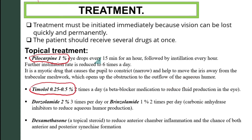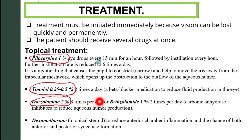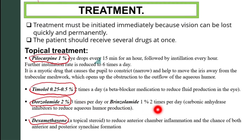The second topical drug is timolol 0.25–0.5%, given two times a day. Timolol is a beta-blocker that reduces fluid production in the eye. Next is dorzolamide 2%, given three times per day, or brinzolamide 1%, two times per day — both are carbonic anhydrase inhibitors which reduce aqueous humor production. Dexamethasone, a topical steroid, is used to reduce anterior chamber inflammation and the chance of both anterior and posterior synechia formation.